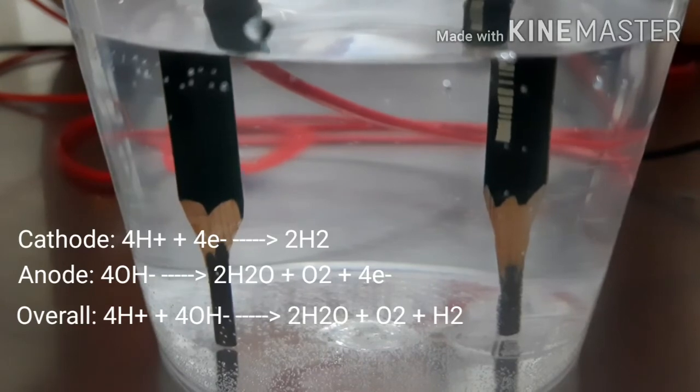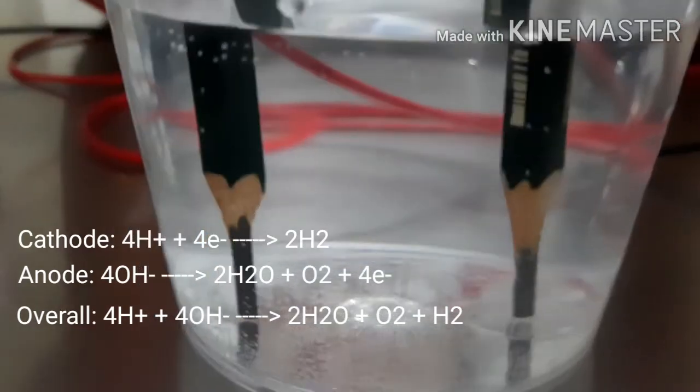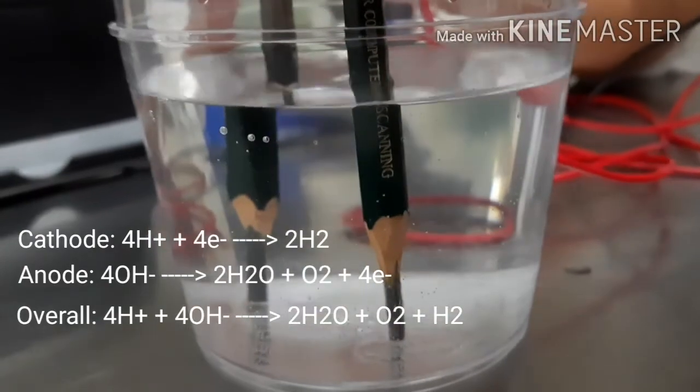And even though it's less obvious, there are some bubble gases on the positive side of the pencil as well. These are oxygen that's formed by the negative charge ions combined with the positive charge of the pencil.